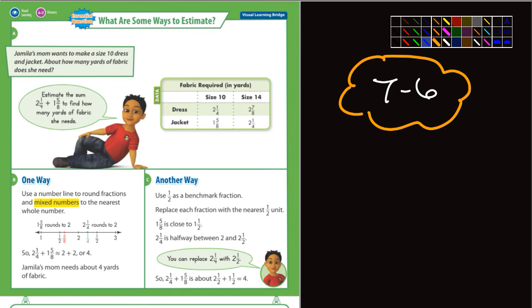So in this first example here, it says Jamalia's mom wants to make a size 10 dress and jacket. About how many yards of fabric will she need? Estimate the sum of 2 1/4 and 1 5/8 to find out how many yards of fabric she needs. So here's the size 10 jacket. That's where they got those particular numbers.